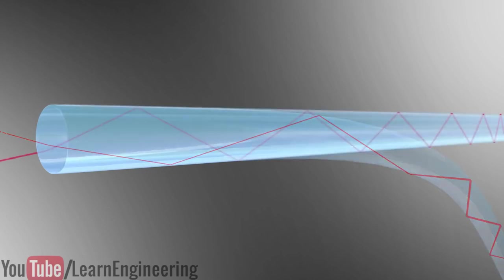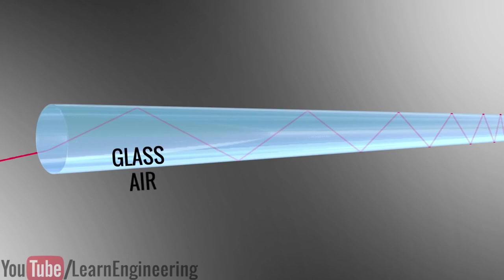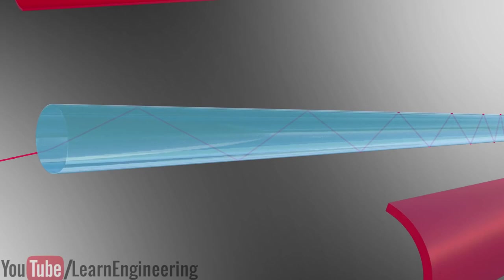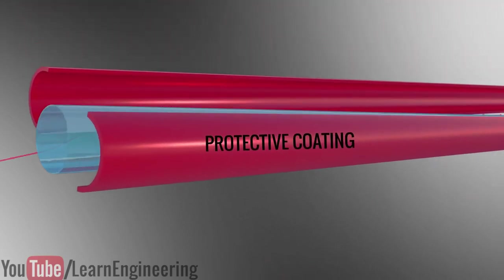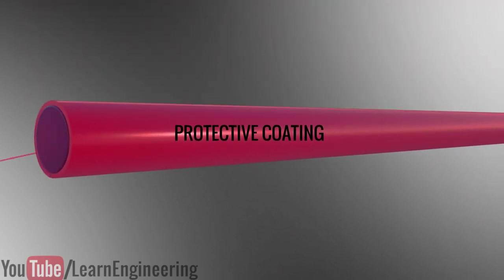Remember, total internal reflection happens between the high refractive index glass and the low refractive index air. However, optical fibers need a protective coating. A protective coating is not possible with this configuration. The introduction of protective material will replace the position of the air and cease the total internal reflection phenomenon.